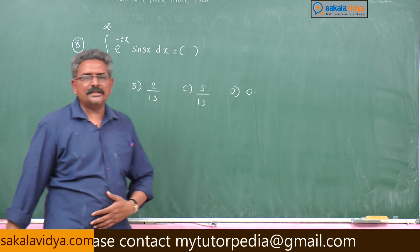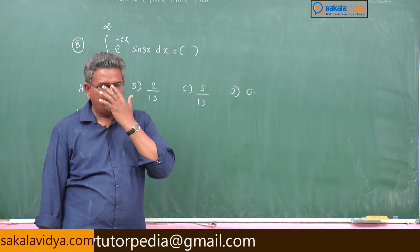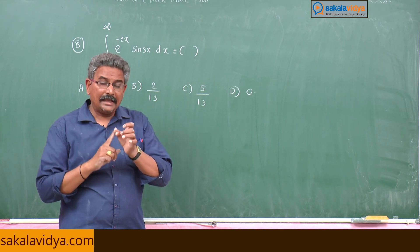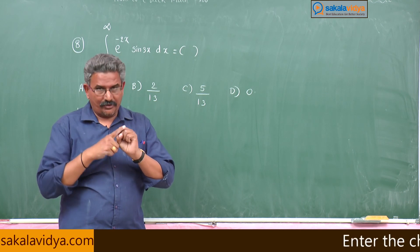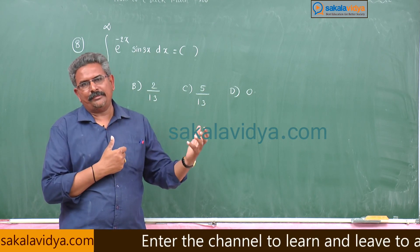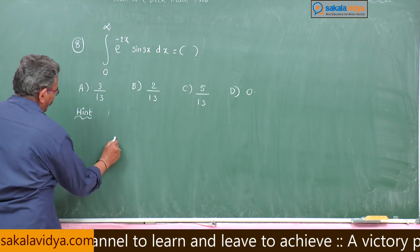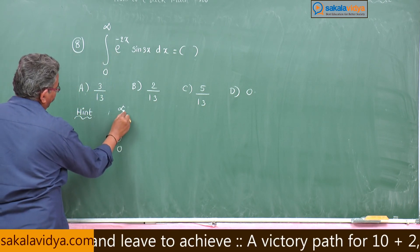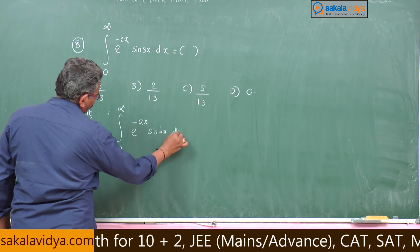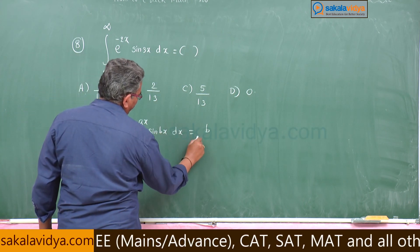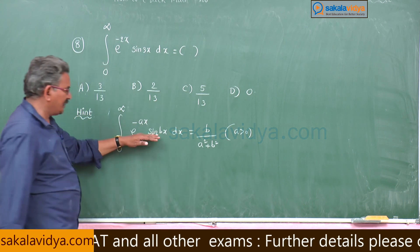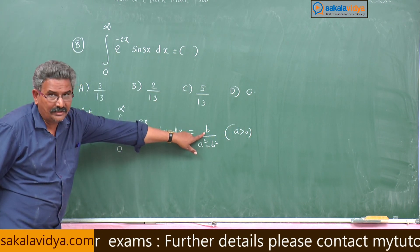To solve this problem we could apply the LIATE rule — logarithmic, inverse trigonometric, algebraic, exponential — but that is very lengthy. Better to remember this as a formula. The formula is: ∫₀^∞ e^(−Ax) sin(Bx) dx = B / (A² + B²), provided A > 0. If cosine is there instead of sine, you write A in the numerator instead of B.